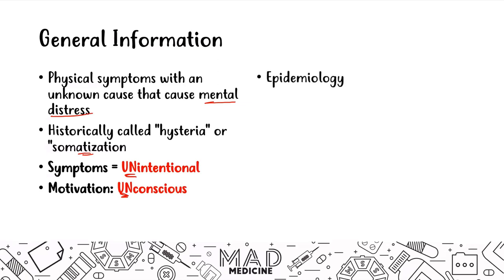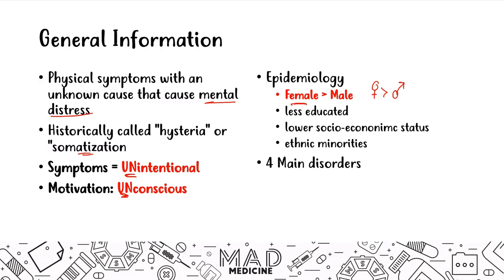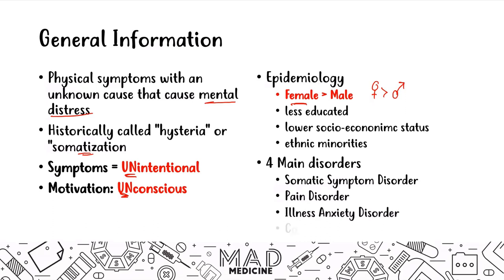When it comes to epidemiology, all of these disorders we're going to be talking about today are more prevalent in females than in males. It's also more prevalent in the less educated and lower socioeconomic class, as well as ethnic minorities. There are four main disorders we're going to be discussing: somatic symptom disorder, pain disorder, illness anxiety disorder, and conversion disorder.